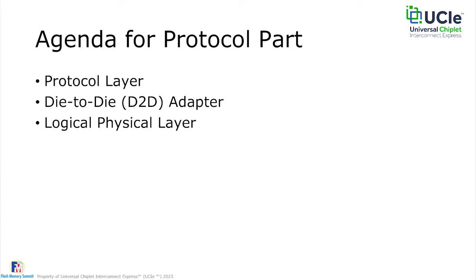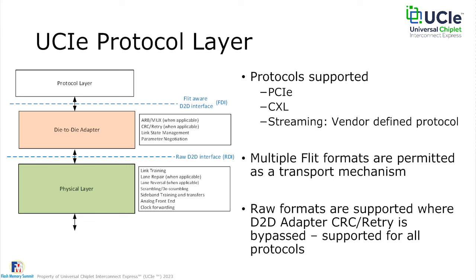The electrical aspects and form factor side will be covered by Joe in the next session. UCIe is a layered stack with well-defined functionality for each layer. We start with the protocol layer at the top, then we have a defined interface called FDI — the Flit Die-to-Die Interface — that talks to the die-to-die adapter. The adapter handles responsibilities like CRC retry, link state management, protocol negotiation, and for CXL it also does the ArbMux functionality defined in the CXL specification.